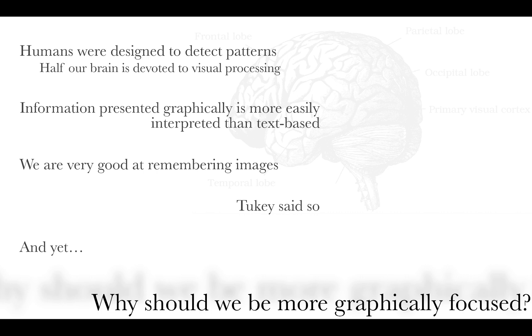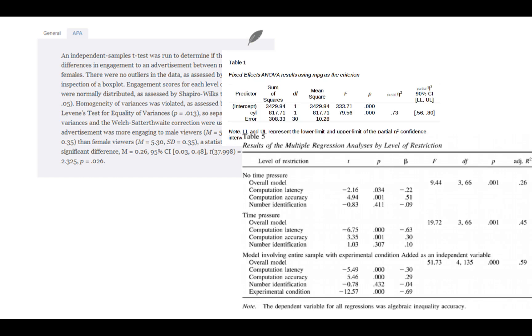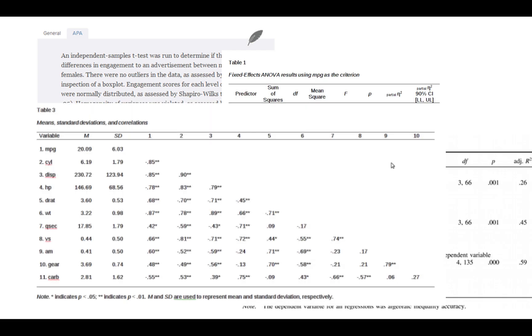And yet, what do we find published in APA journals? Lots and lots of text and tables. So you might be thinking to yourself, WTF? Why the focus on text? Why is nobody talking about graphics?